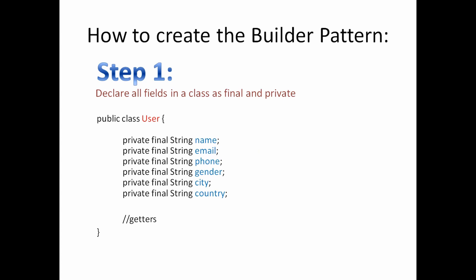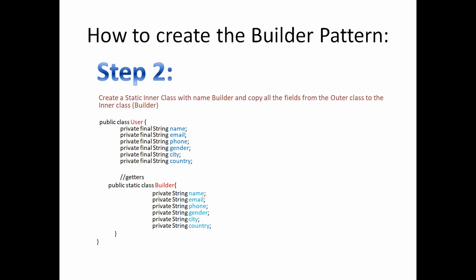First, we will declare a class with the name User with fields: name, email, phone, gender, city, and country, along with their getter methods only. We will declare these fields as final so that they can only be initialized once, making this class immutable. In the next step we will create our Builder class, which will be a static inner class inside the User class, and we will copy all the fields from the User class to the Builder class.